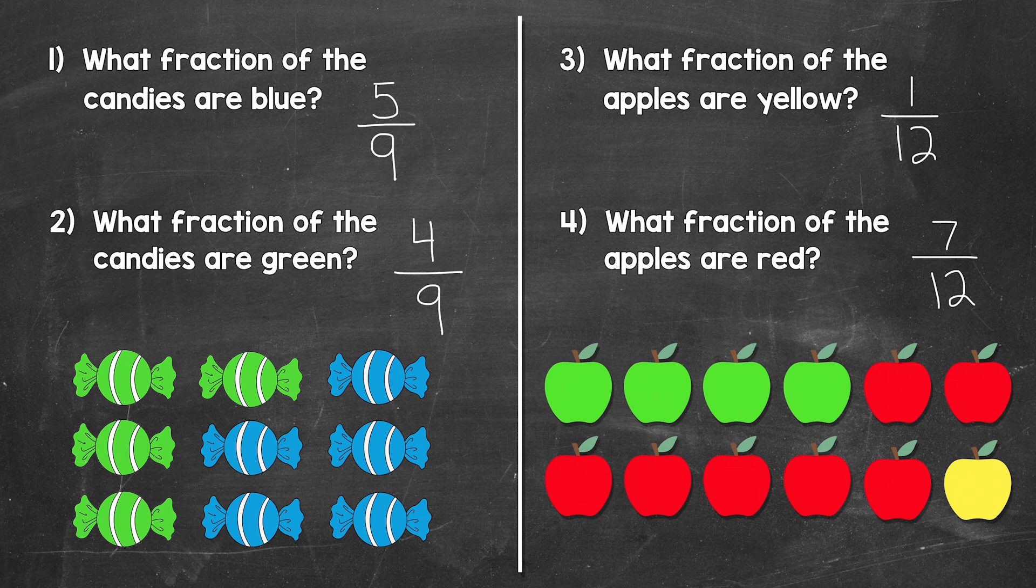For number two, we have four ninths. Four of the candies are green out of the nine in total. Taking a look at number three now, we have one twelfth. One apple is yellow out of the 12 in total.